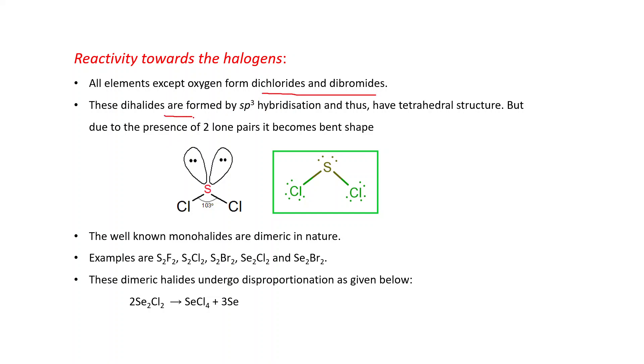All elements except oxygen form dichlorides and dibromides. These dihalides are formed by sp3 hybridization and have tetrahedral structure. But hybridization is sp3, which means total electron pairs are four. But out of four, two are lone pairs. That's why its shape becomes bent shape. You can see this is SCl2.